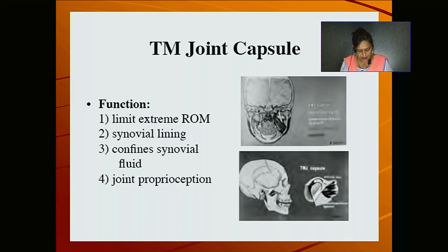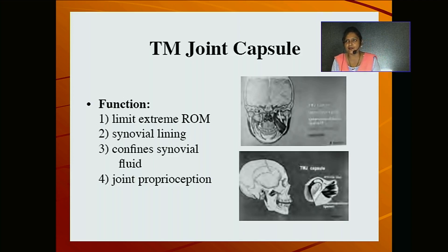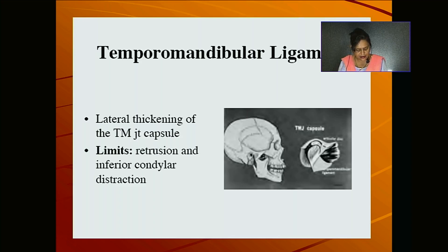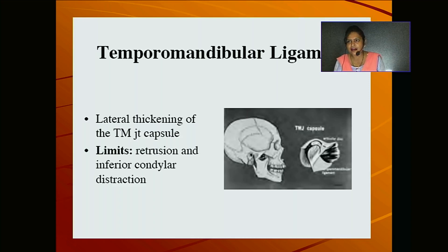The capsule is loose above the intra-articular disc and tight below it, to provide free movement of the joint. The synovial membrane lines the inner side of the joint cavity. The lateral temporomandibular ligament provides thickening to the TM joint capsule — it intermingles with the capsule to reinforce and strengthen it at the lateral part. Its fibers are directed toward the articular tubercle, and it functions to limit retrusion and inferior condylar distraction.